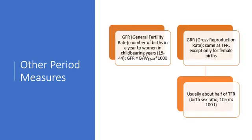Two other period measures that are perhaps less familiar are the general fertility rate, which limits the age range to only those women in childbearing years — the number of births relative to the population of women between the ages of 15 and 44. The gross reproductive rate is another one that's perhaps less familiar. It's the same as the total fertility rate, but only focuses on those births that result in females, not males. So that's going to be about half of the total fertility rate, since about half of births result in females instead of males.